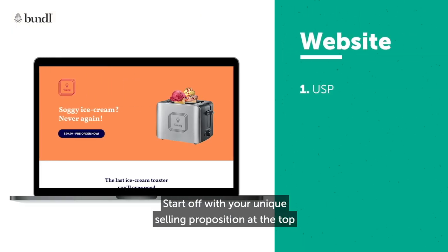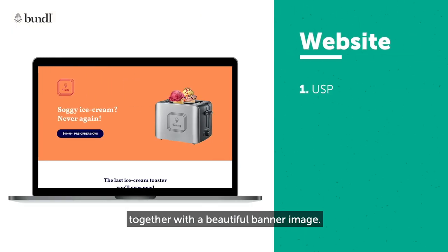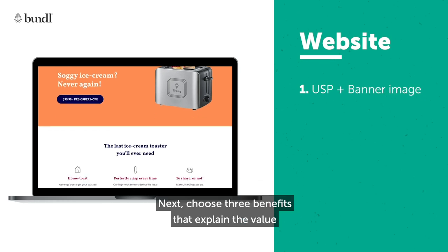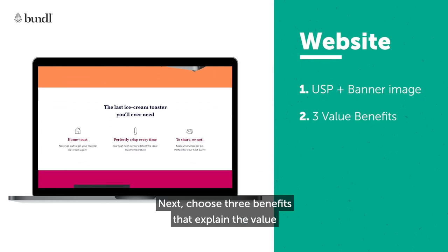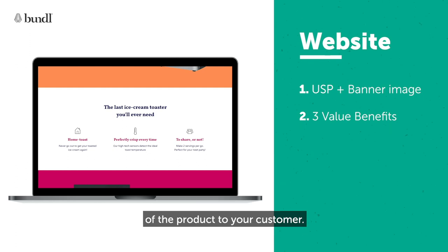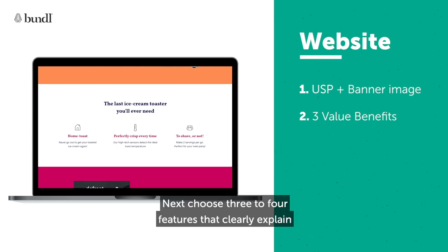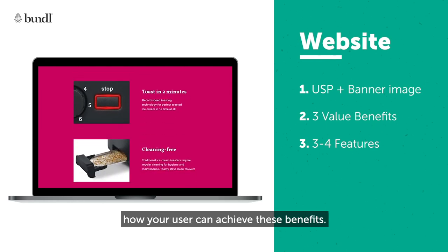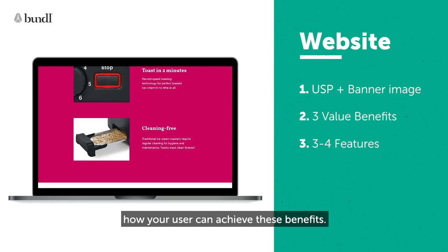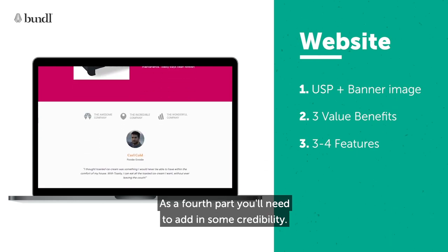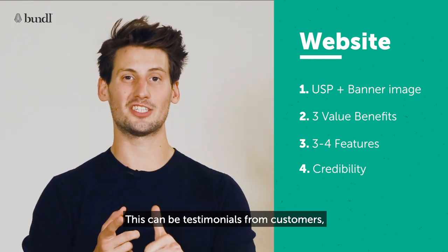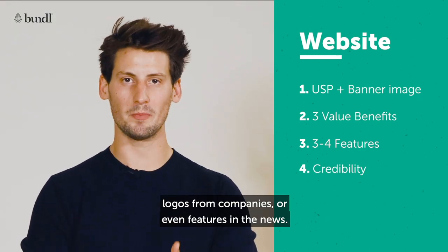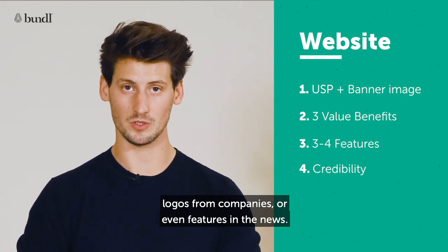Start off with your unique selling proposition at the top, together with a beautiful banner image. Next, choose three benefits that explain the value of the product to your customer. Next, choose three to four features that clearly explain how your user can achieve these benefits. As a fourth part, you'll need to add in some credibility — these can be testimonials from customers, logos from companies, or even features in the news.